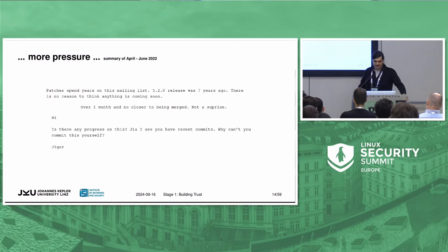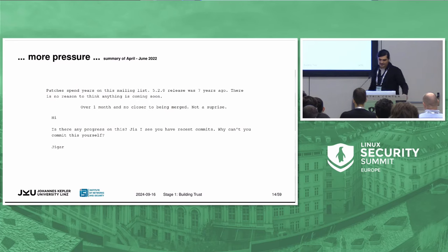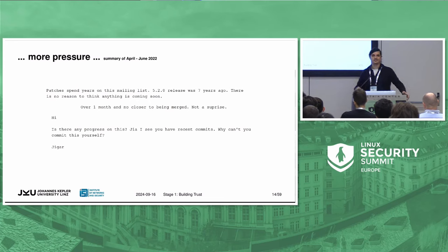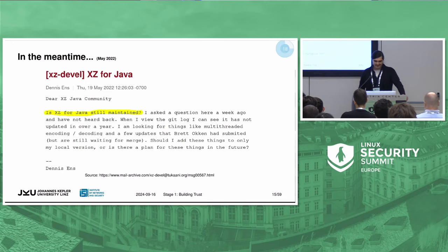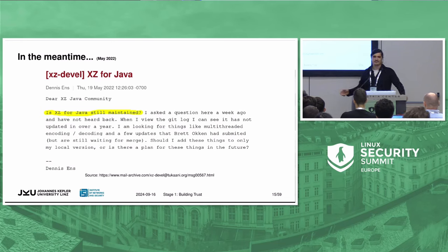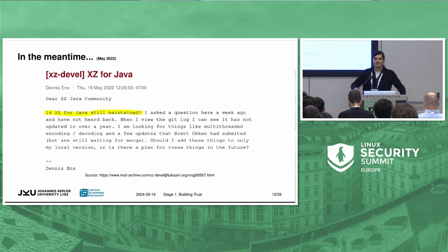More statements came from different users: patches spent over one month on this mailing list with no closer to being merged. The last sentence — 'why can't you commit this yourself?' — was the first sign that the goal of the attacker was to get commit permissions on this open source repository. Meanwhile in May 2022, there is another patch thread ongoing, but for the project xz-java — a different one — and a new user called Dennis Enns, who also started to put more pressure on the original maintainer within another project.